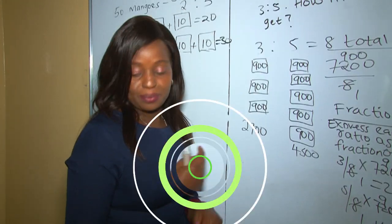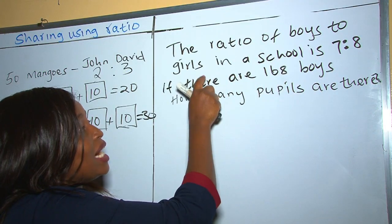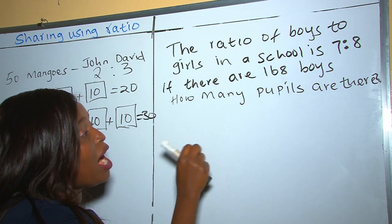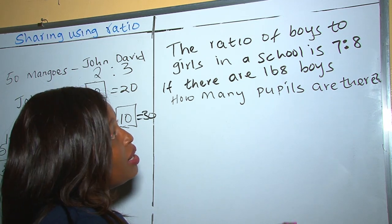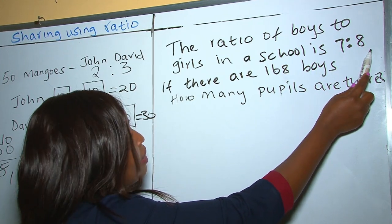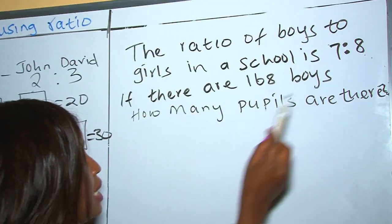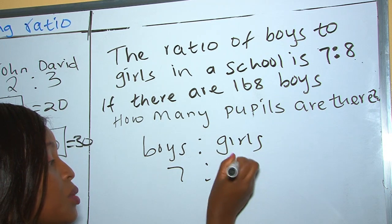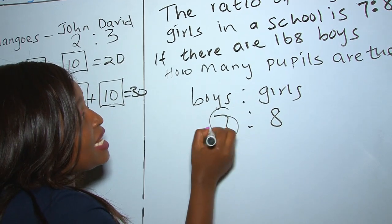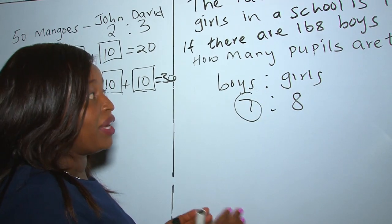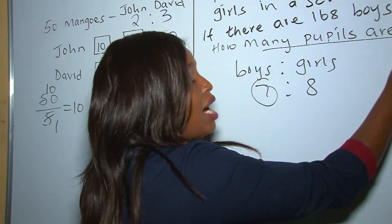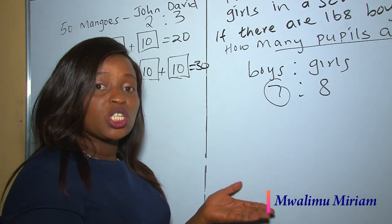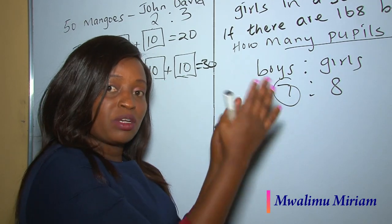In the next example, the ratio of boys to girls in a school is 7 is to 8. If there are 168 boys, how many pupils are there in total? The ratio is 7 is to 8, where 7 belongs to boys. We are asked for the total number of pupils, which includes both boys and girls.